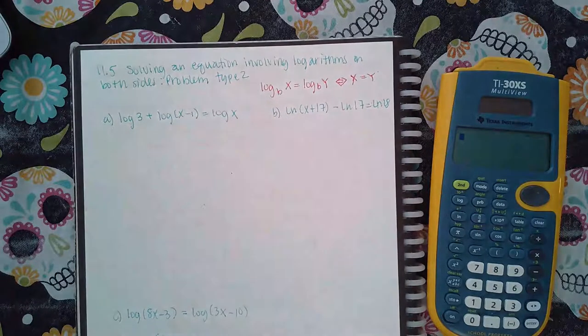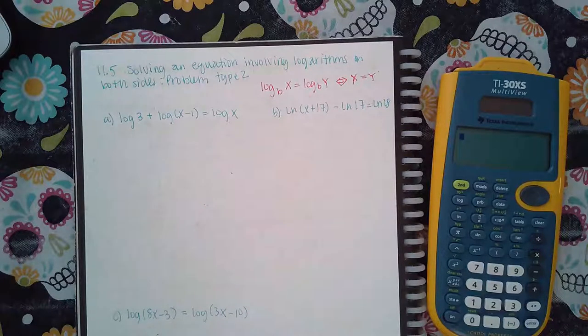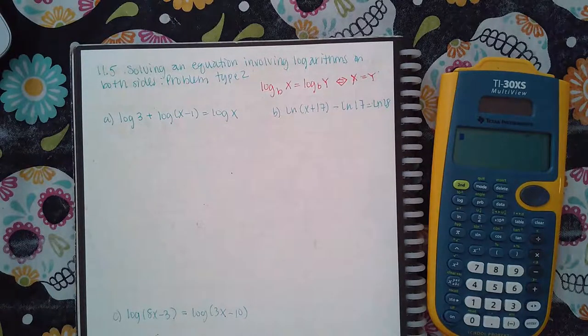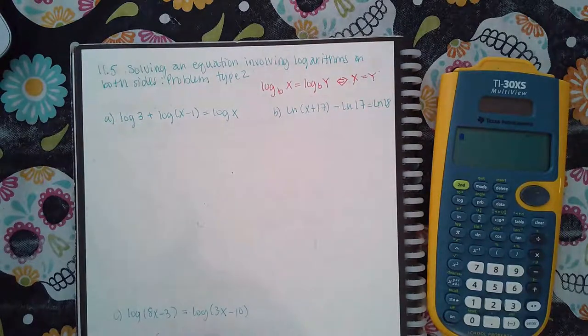But before you can apply that property it has to be just one log on one side and one log on the other side. If you notice in all of these examples, well this one is good right? It has just one log equal to one log.